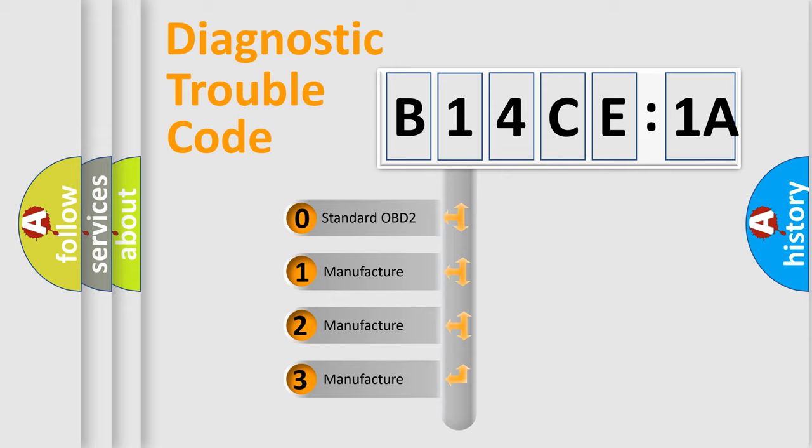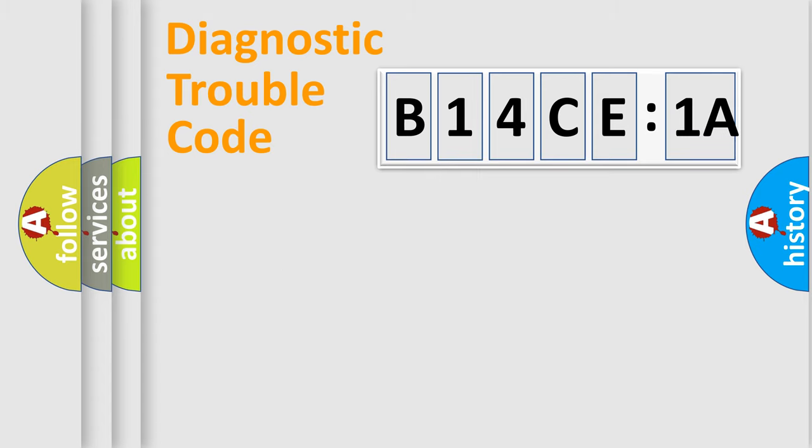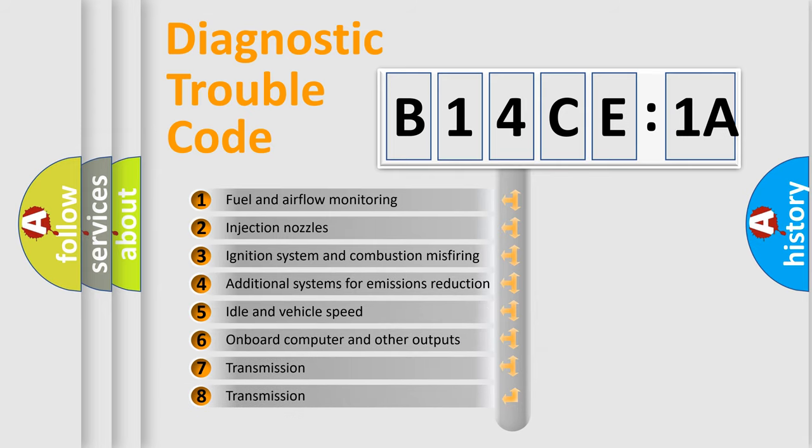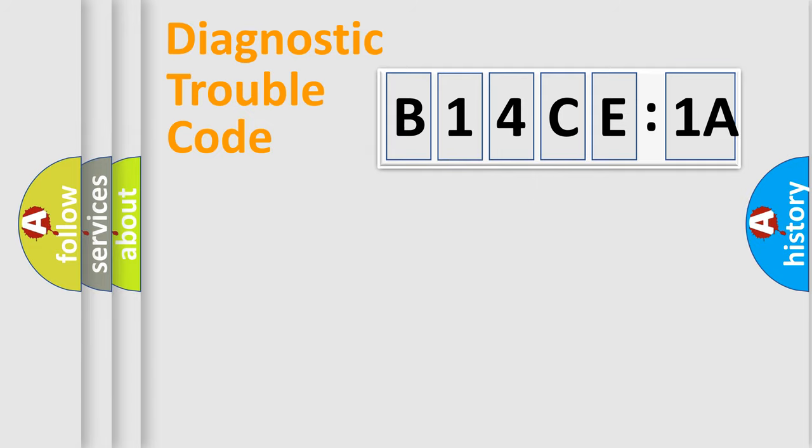If the second character is expressed as zero, it is a standardized error. In the case of numbers 1, 2, or 3, it is a more specific expression of the car-specific error. The third character specifies a subset of errors. The distribution shown is valid only for the standardized DTC code. Only the last two characters define the specific fault of the group.